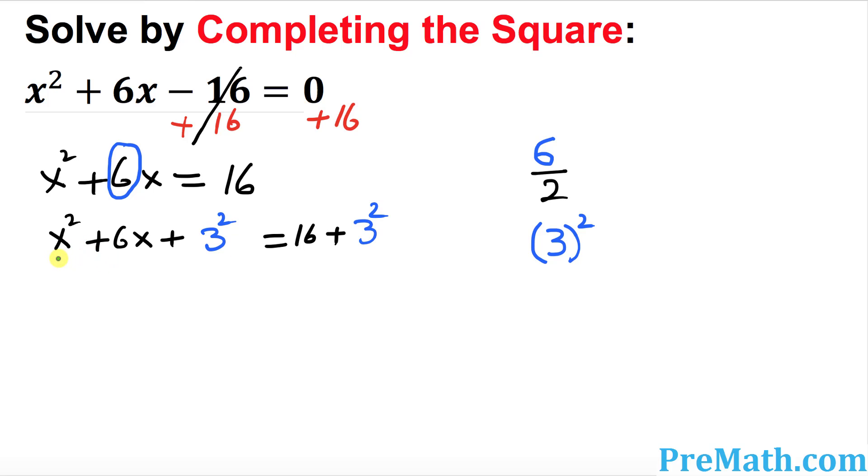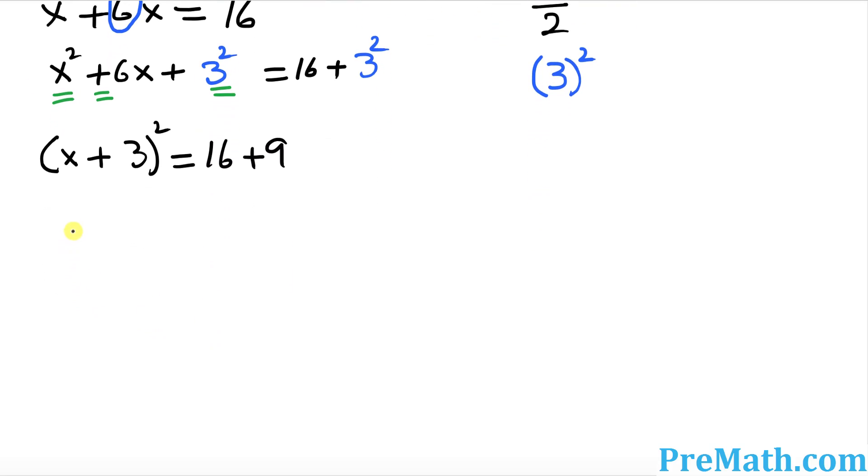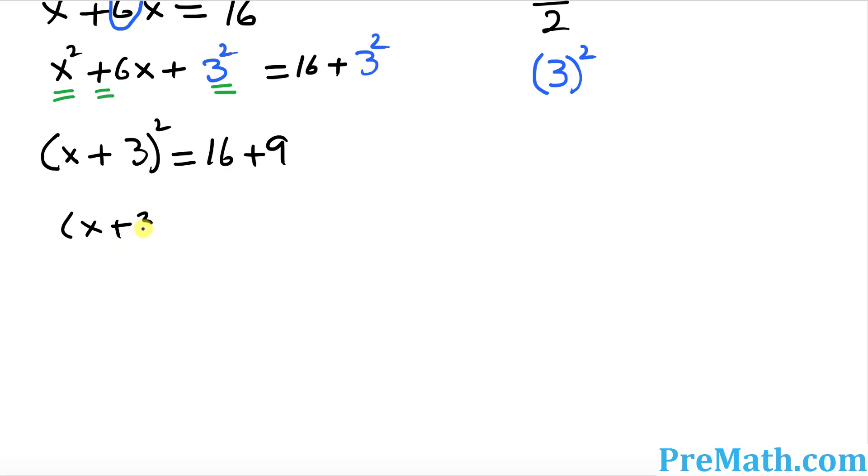Now look at this. This x, this 3, and this plus sign must show up right up here. This whole thing is gonna become a complete square. Put down x, then this sign which is plus, and this 3. This becomes a complete square equal to 16 plus 9. So that becomes x plus 3 squared equals 25.